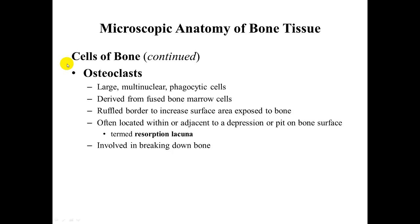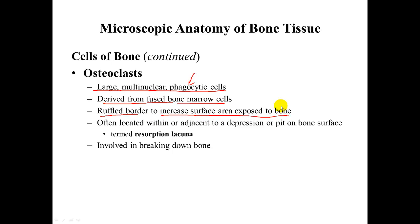Osteoclasts are large multi-nuclear phagocytic cells, meaning they eat other things through the process of phagocytosis. They are derived from fused bone marrow cells. They have a ruffled border to increase the surface area exposed to bone, which allows the osteoclasts to be more efficient in bone resorption. They are often located within a depression on the bone surface called a resorption lacuna.